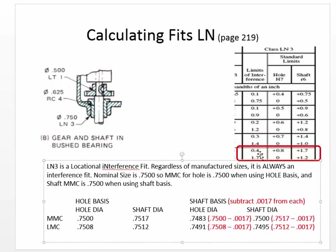These values give the same relationship between the shaft and the hole as the hole-basis values do. If we take a look at the table, the difference between the two is going to be 4 tenths or 1.7 thousandths, depending on whether it's maximum material condition or least material condition. At max material condition, we have an interference of 1.7 — .7500 versus .7517. That's our limit of interference. The other limit of interference is .4 thousandths: the difference between .7508 and .7512 is .4 thousandths of an inch. The same thing holds true with the shaft basis.